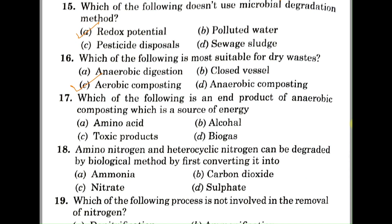Question number seventeen: which of the following is an end product of anaerobic composting that is a source of energy? A: amino acid, B: alcohol, C: toxic products, D: biogas. The correct answer is D, biogas, because it is used as a source of energy and is produced as a result of anaerobic composting.